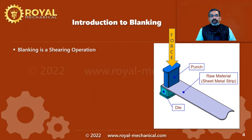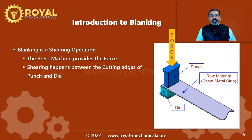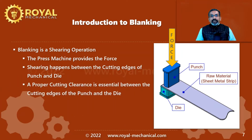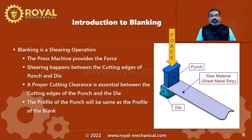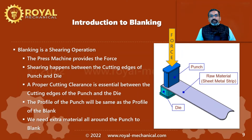Blanking is a shearing operation. The force required for the blanking or shearing operation is provided by the press machine. The shearing happens between the cutting edge of the punch and the cutting edge of the die. A proper cutting clearance between these cutting edges is essential for the shearing to happen. The profile of the punch and the die shall be the same as the profile of the blank. We need a certain amount of extra raw material all around the punch for the blanking operation to happen.